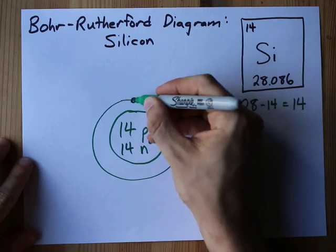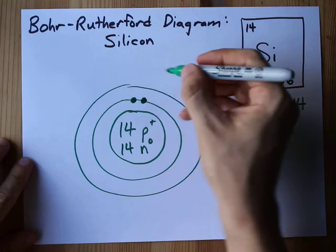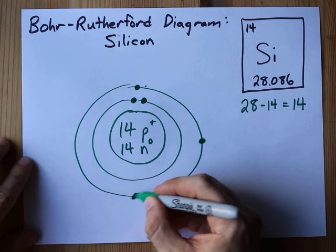The first shell can hold two. The second shell can hold up to eight, and I'm certainly gonna need all eight because I gotta get up to 14.